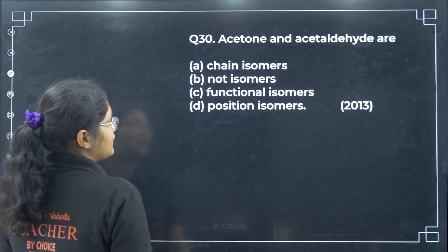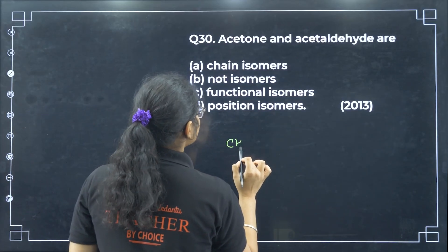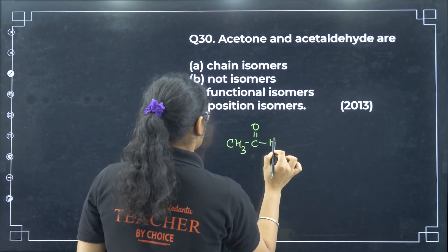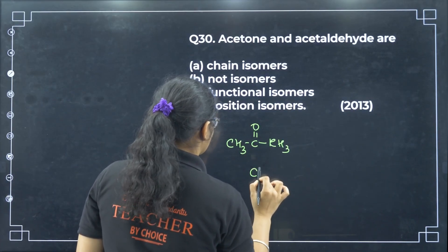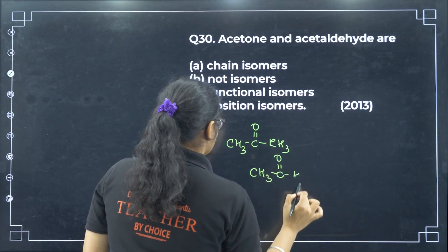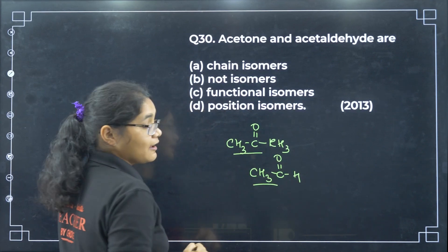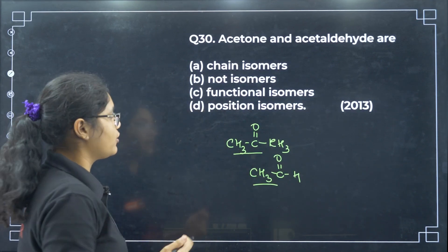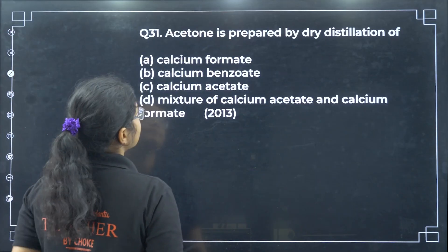Acetone and acetaldehyde: acetone has 3 carbons and acetaldehyde has 2 carbons, so their molecular formulas are not the same. These are not isomers — option B.